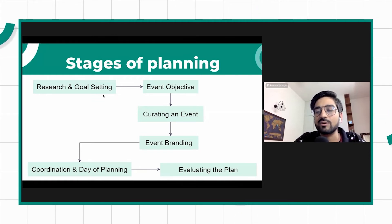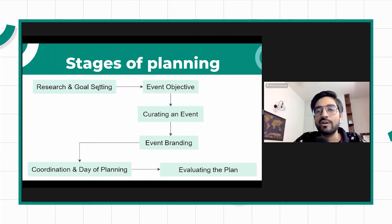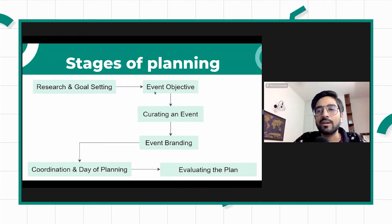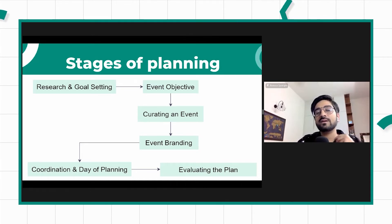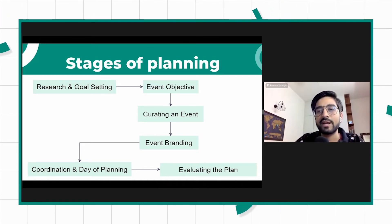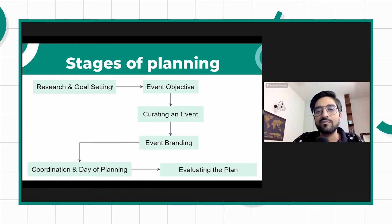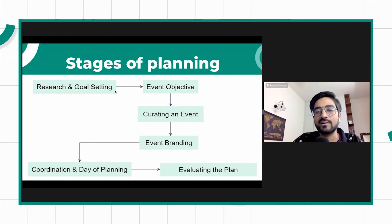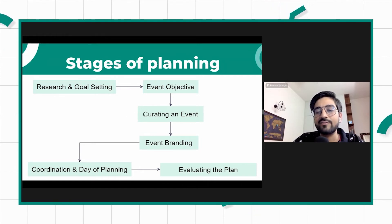What we have done at communityhood is create different formats of events using this philosophy, and now we don't need to revisit those two things every time. For example, if it's a roundtable, then the main goal is deeper community engagement more than member acquisition as the core business objective. So we don't need to think of it every time now because the series of event is defined.